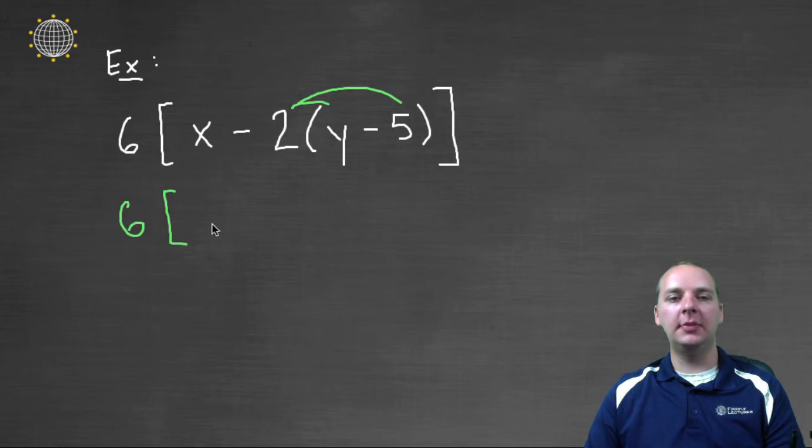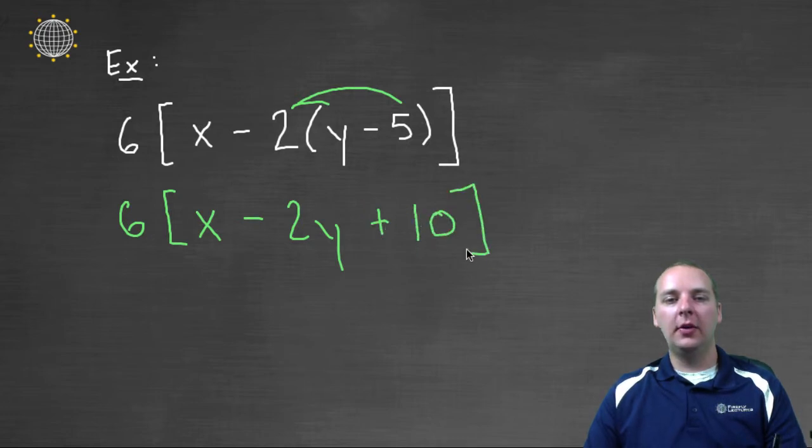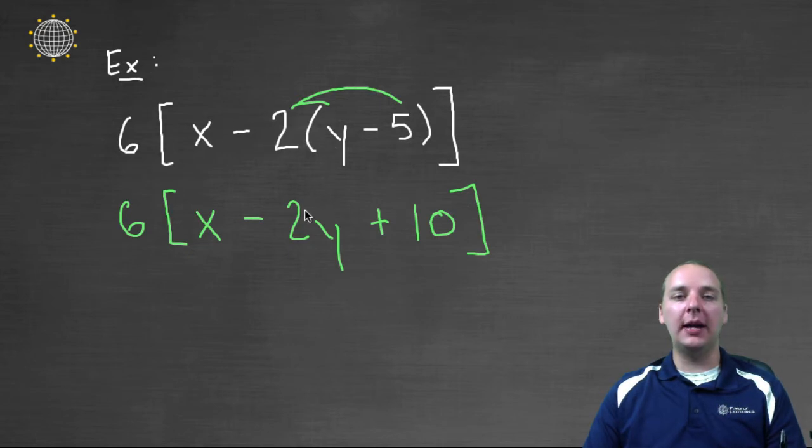So we'll have six times the quantity x, then we'll have minus two y, because we're distributing the negative two to the y. And negative two times negative five makes plus ten. Okay, so notice, once we've applied the distributive property inside the brackets, the parentheses on the inside are gone, right? We've applied the distributive property.